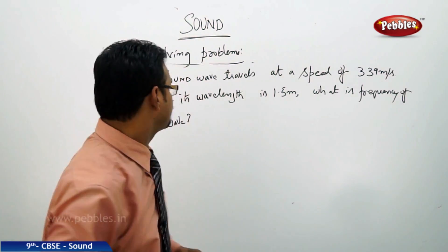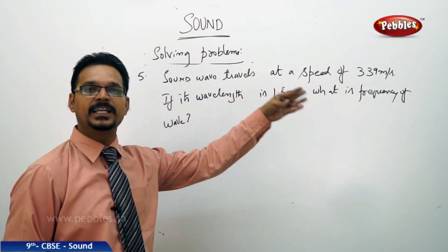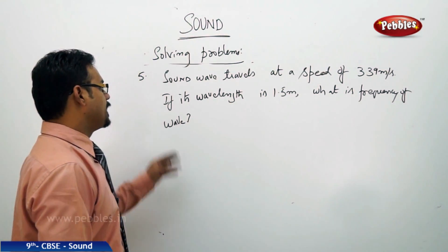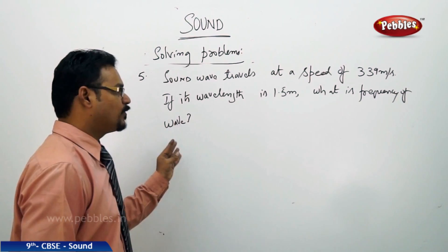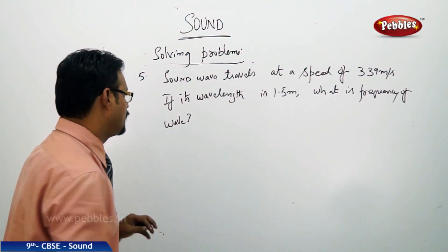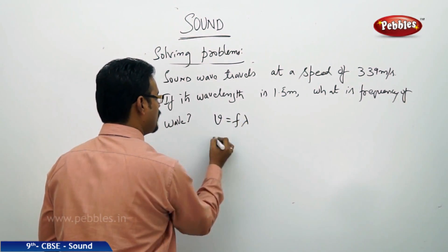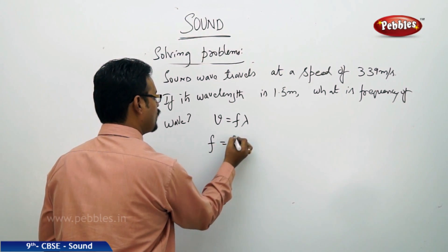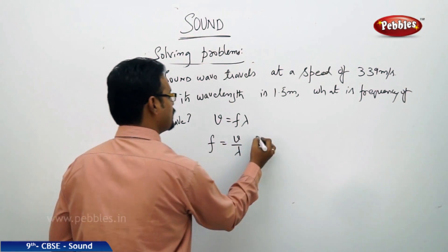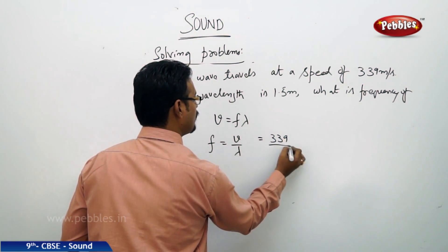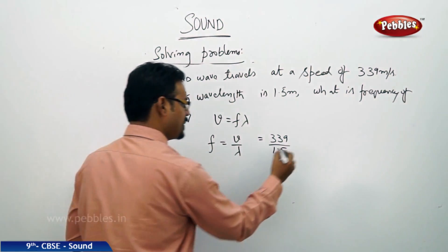Problem 5: A sound wave travels at a speed of 339 m/s. If its wavelength is 1.5 meters, what is the frequency of the wave? Using v = fλ, so f = v/λ = 339 / 1.5 = 226 Hz. This is a direct substitution problem.